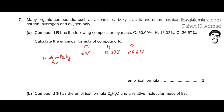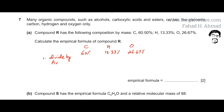The first step in finding the empirical formula is that you divide the percentage mass by the AR to find the relative moles of all three substances. Carbon's AR is 12, hydrogen's AR is 1, and oxygen's AR is 16.